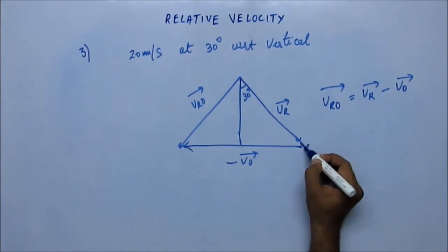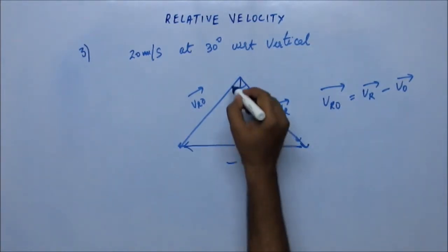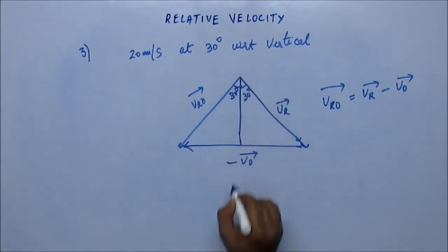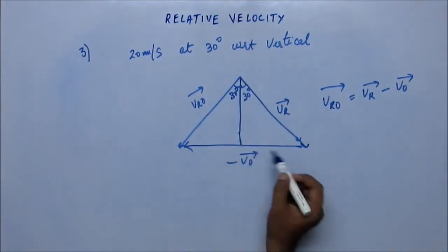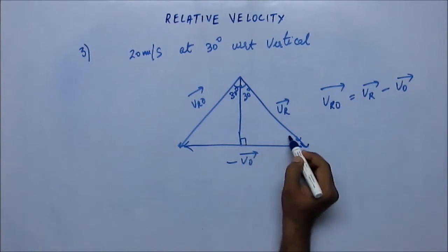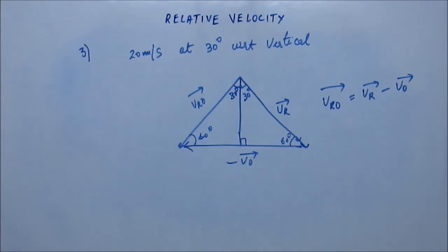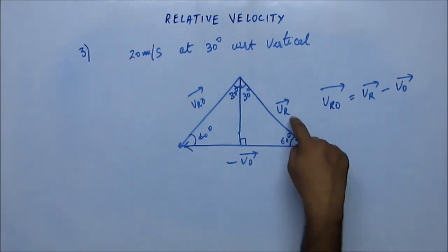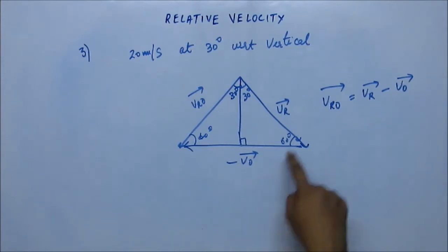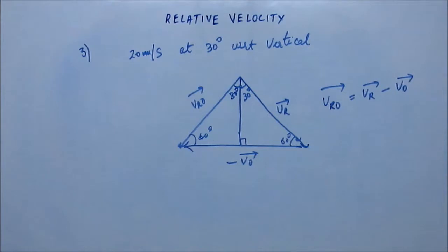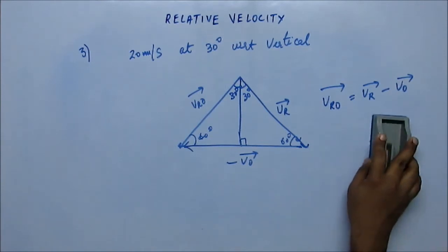The summation of those two vectors equals this vector, as seen from the triangular law of vector addition. This is 30 degrees, this is the vertical line, the man is running horizontally so this vector is horizontal, this must be 90 degrees, this comes out as 60 degrees, and this is also 60 degrees — it's an equilateral triangle. So the magnitude of VR equals the magnitude of V₀. Since the magnitude of VR is given as 20 meters per second, the man should also run at 20 meters per second.